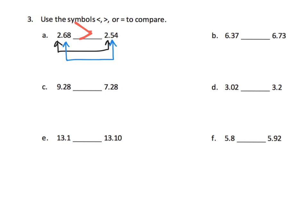Six tenths versus five tenths — that automatically makes 2.68 larger than 2.54. And right here, comparing the ones place, we see that nine is larger than seven — we're done immediately.